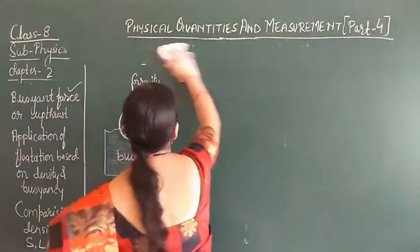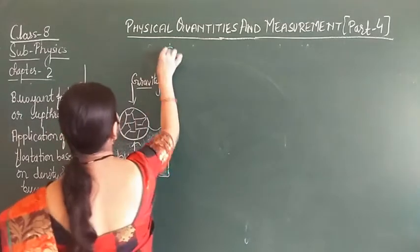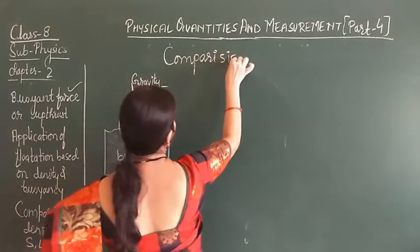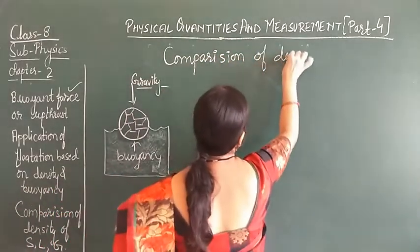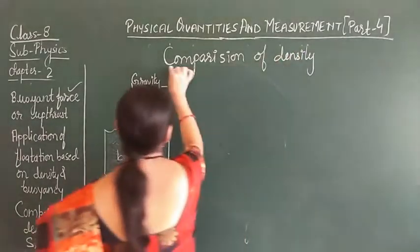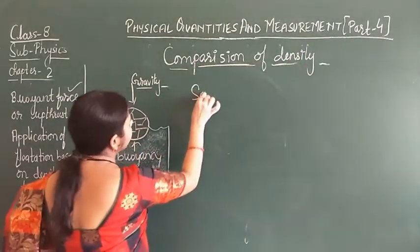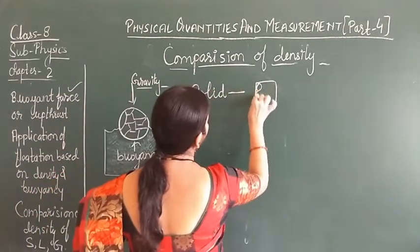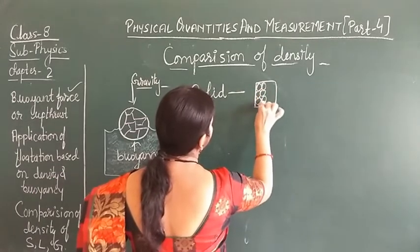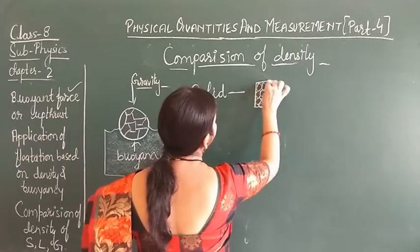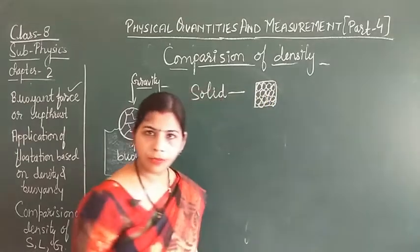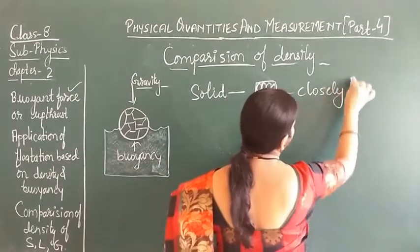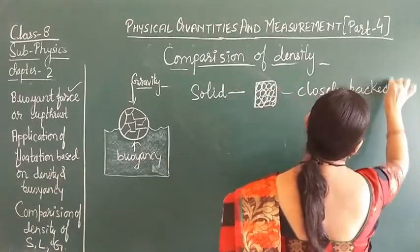Now let's move to the last topic: the comparison of density. If we want to compare the density of solids, liquids, and gases — let's look at solids first. In solids, the molecules are closely packed, which is why it makes the object denser. Hence solids are the densest.